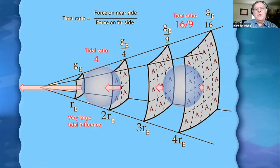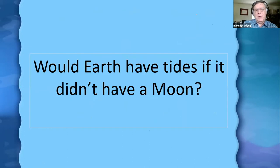For example, if we moved the Earth half the distance closer to the Sun, we'd have much greater tides than we do now. Or if you move the Earth farther away from the Sun or from the Moon, we would get lesser gravitational difference and lower tides.